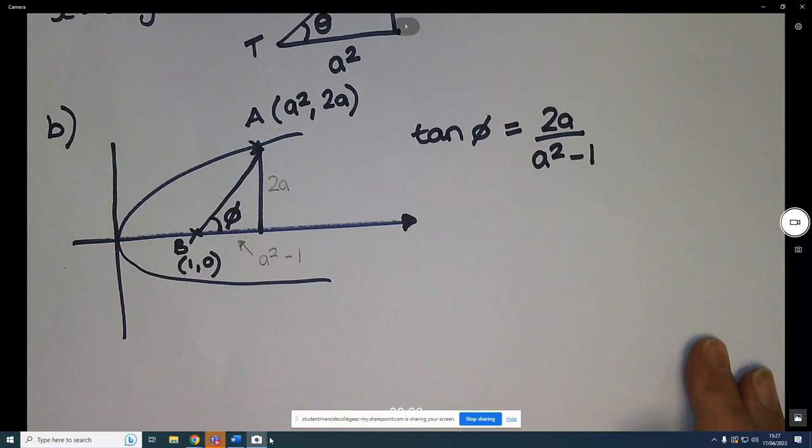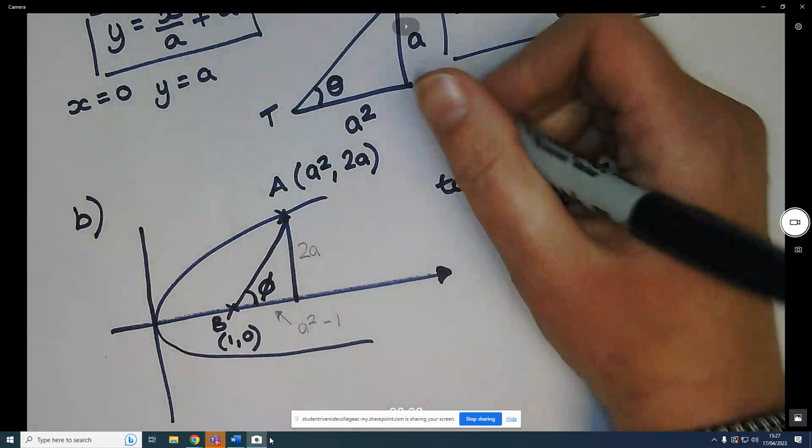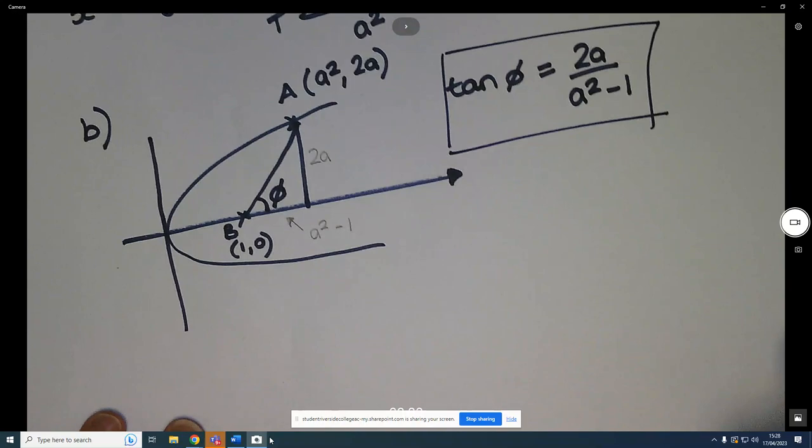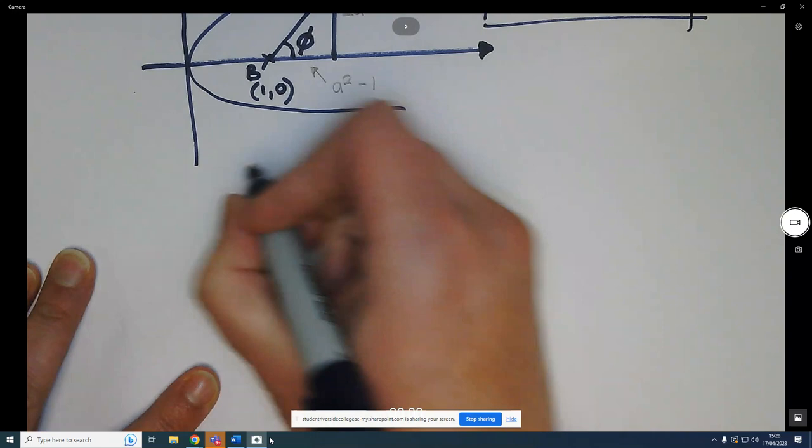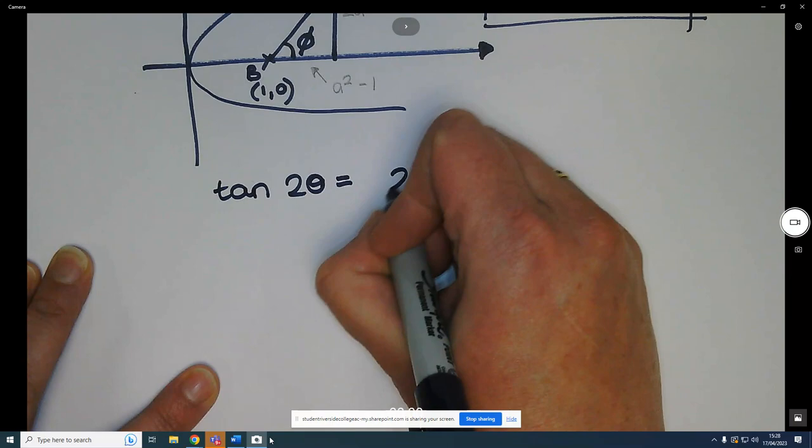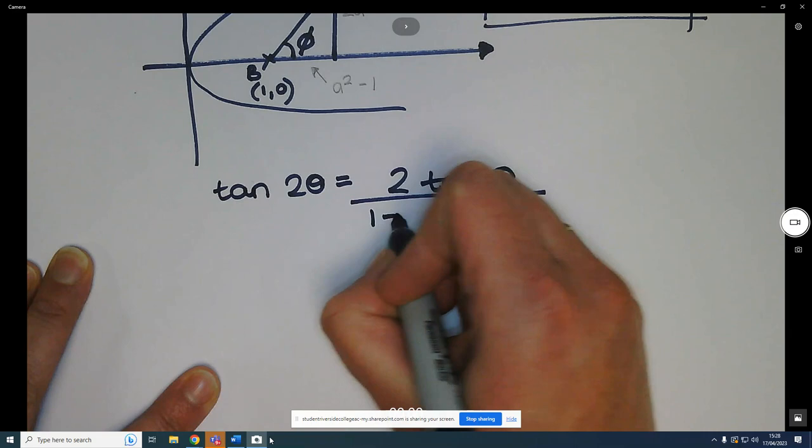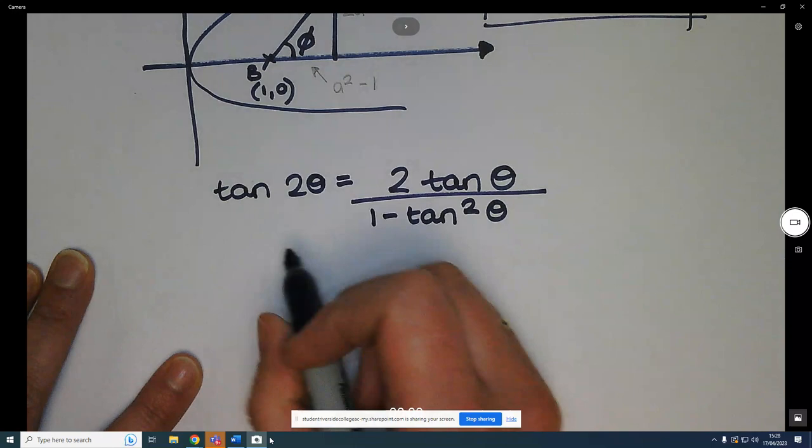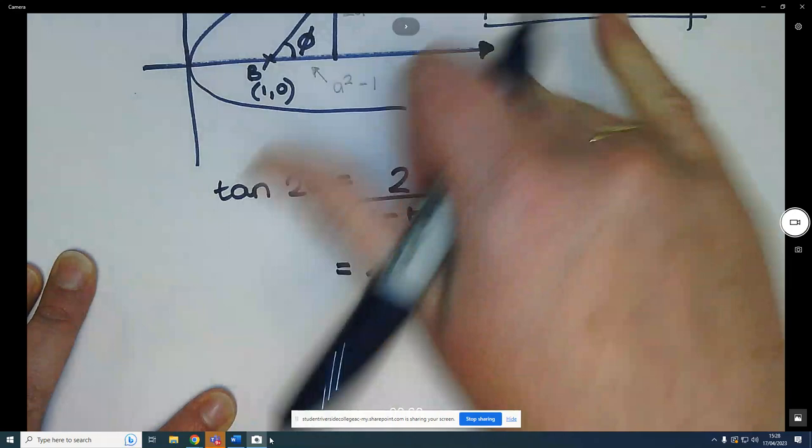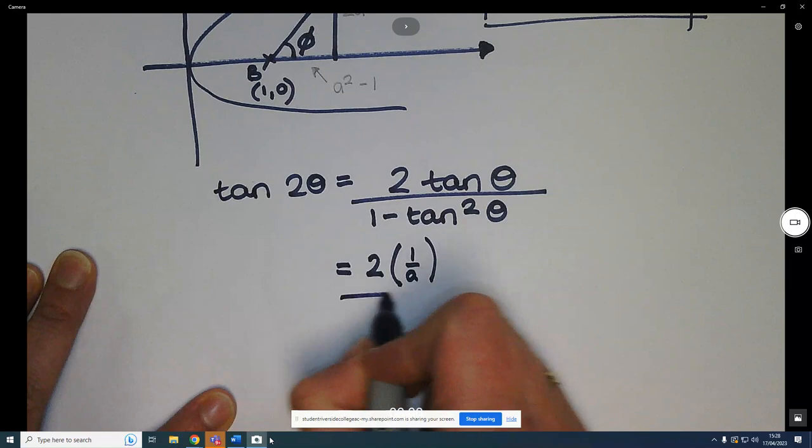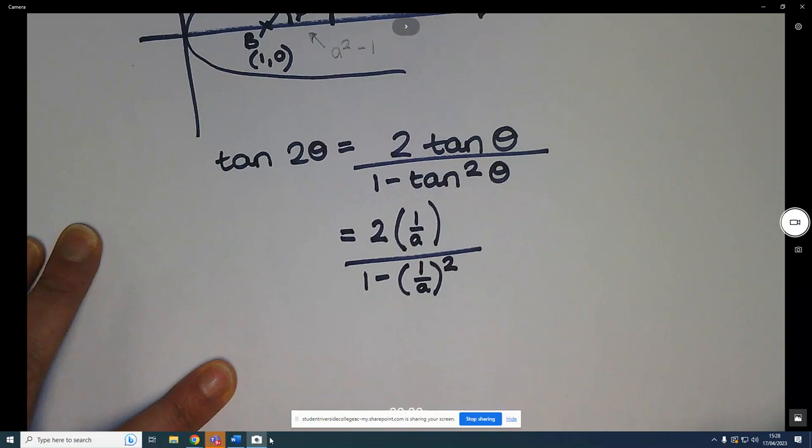Right, for part 3, show that tan of 2 theta equals tan of phi. Now you're given that tan theta is 1 over a and tan of phi is 2a over a squared minus 1. So even if you couldn't do the first two bits, you should be able to do this last bit. So tan of 2 theta, we know because we know our double angle formulae, is 2 tan theta over 1 minus tan squared theta. Now we know that tan theta is 1 over a, and that's over 1 minus tan squared theta, so that's 1 over a all squared.